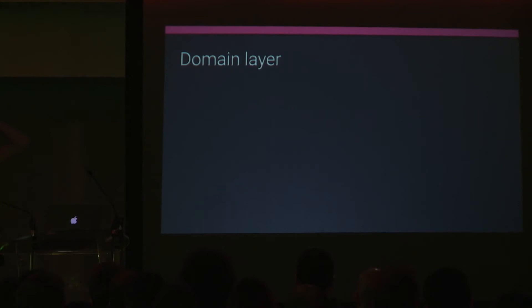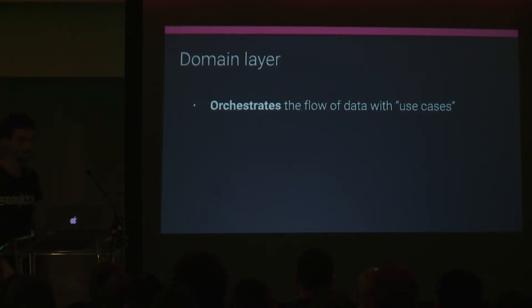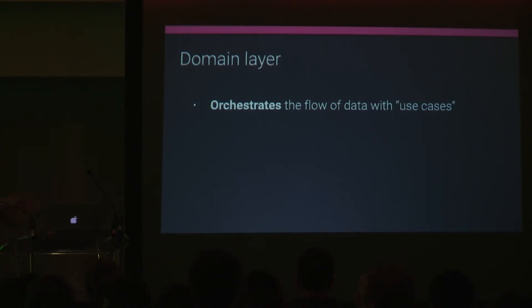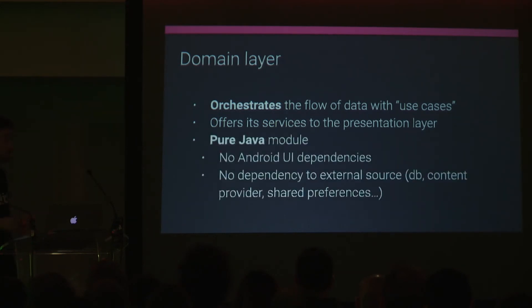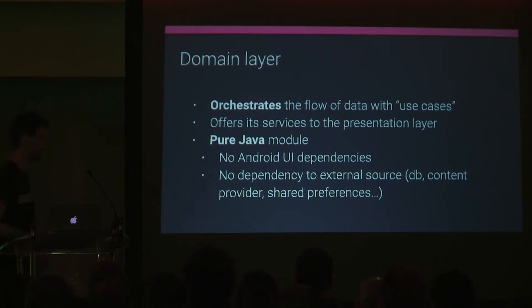The domain layer orchestrates the flow of data. It's described as use cases — in our search screen we have a Search Use Case communicating to the data layer. For each screen you have different use cases. The domain layer offers its services to the presentation layer. The most important thing: it should be a pure Java module that is unit testable, with no Android UI or Android dependencies. It also shouldn't have any dependency on external sources — the data layer is responsible for that.